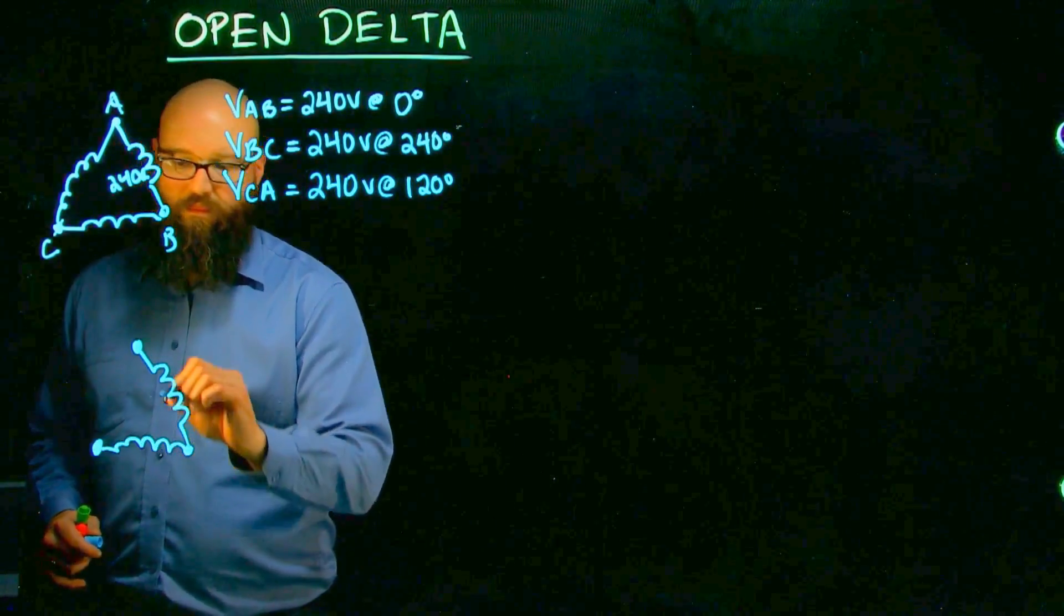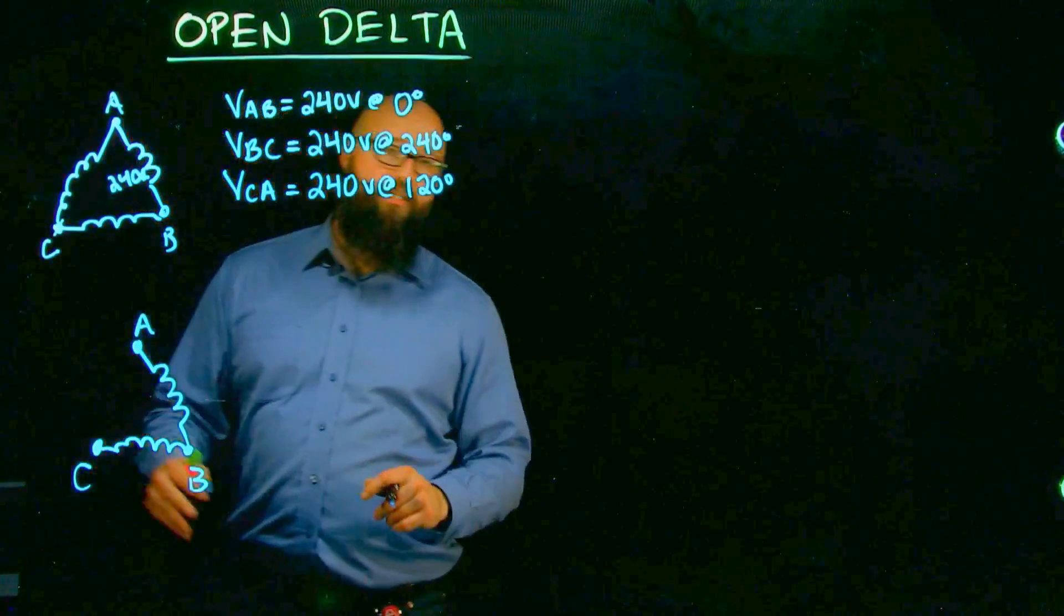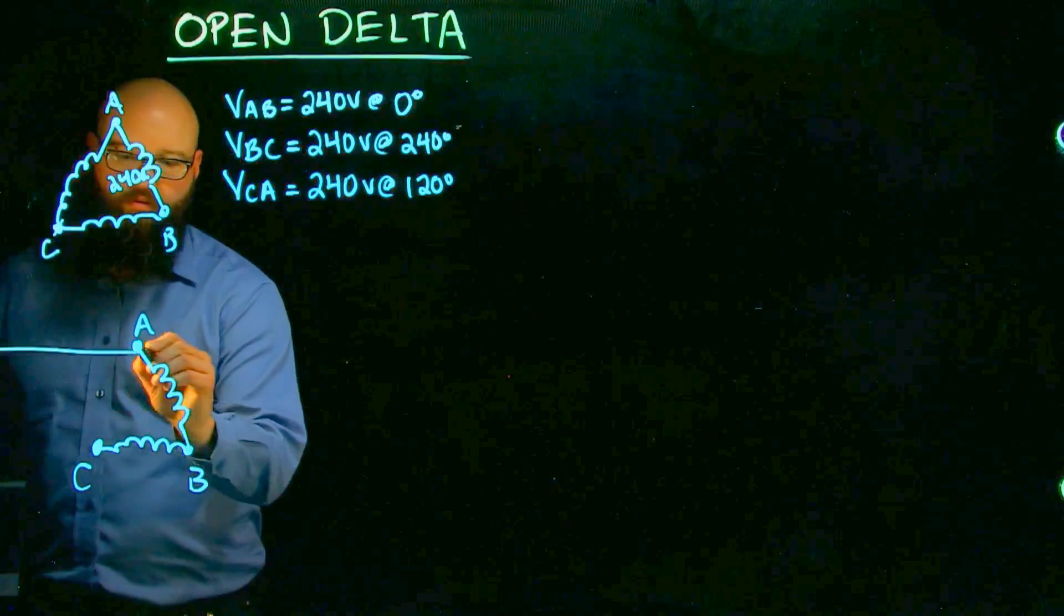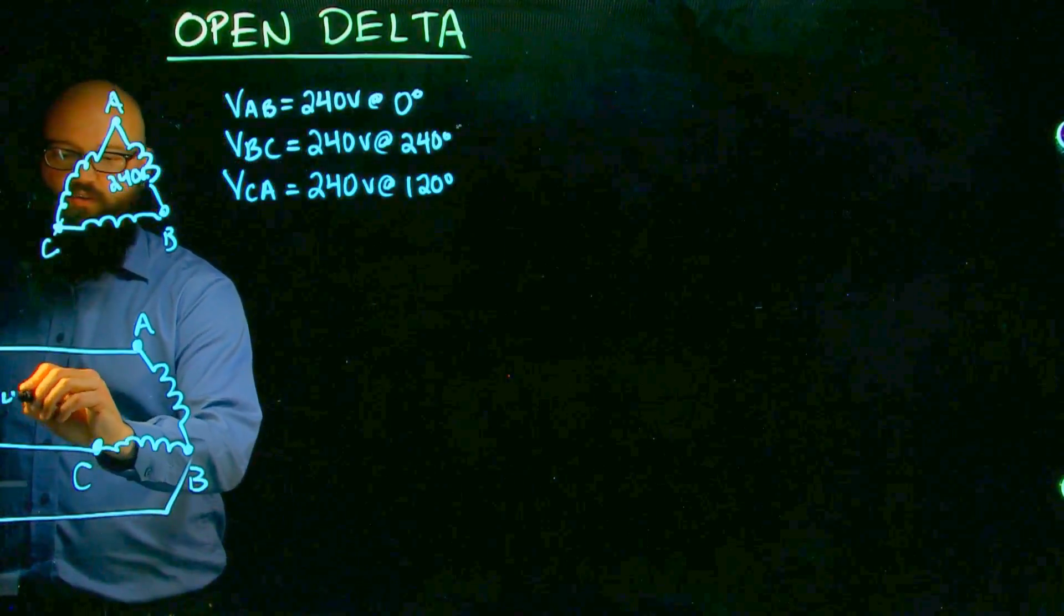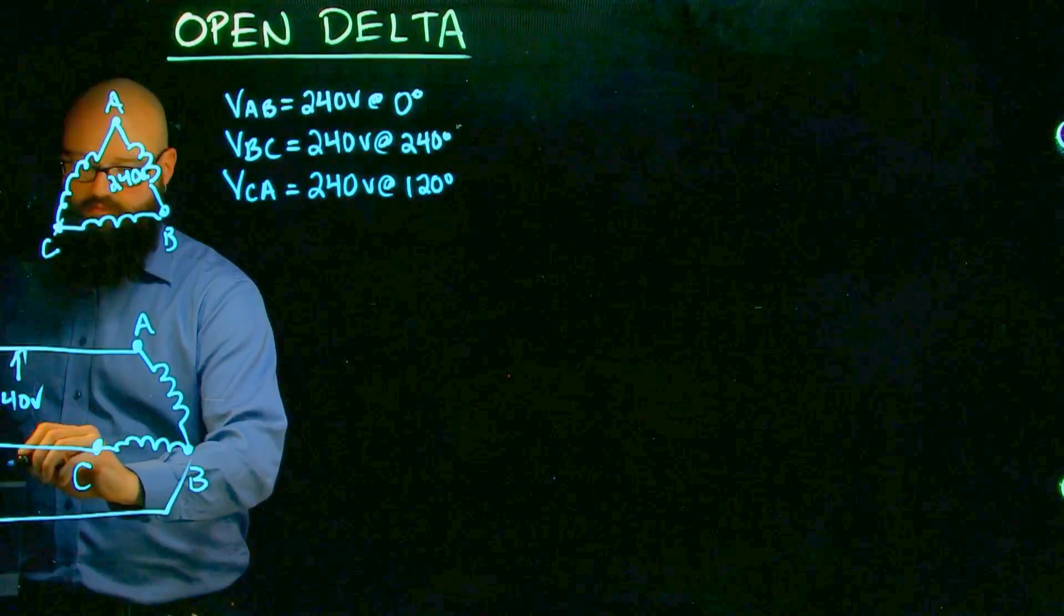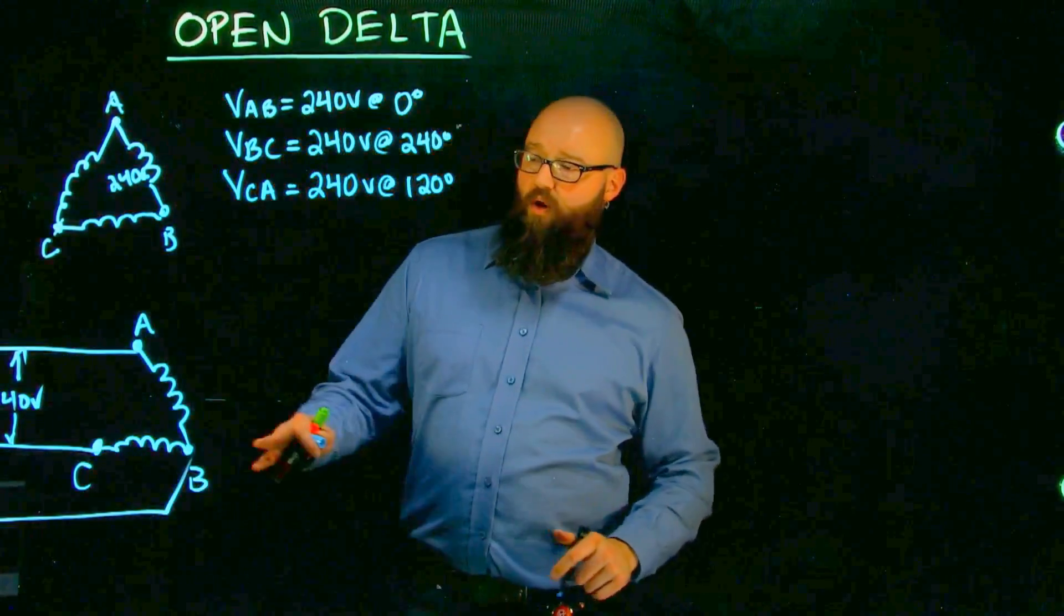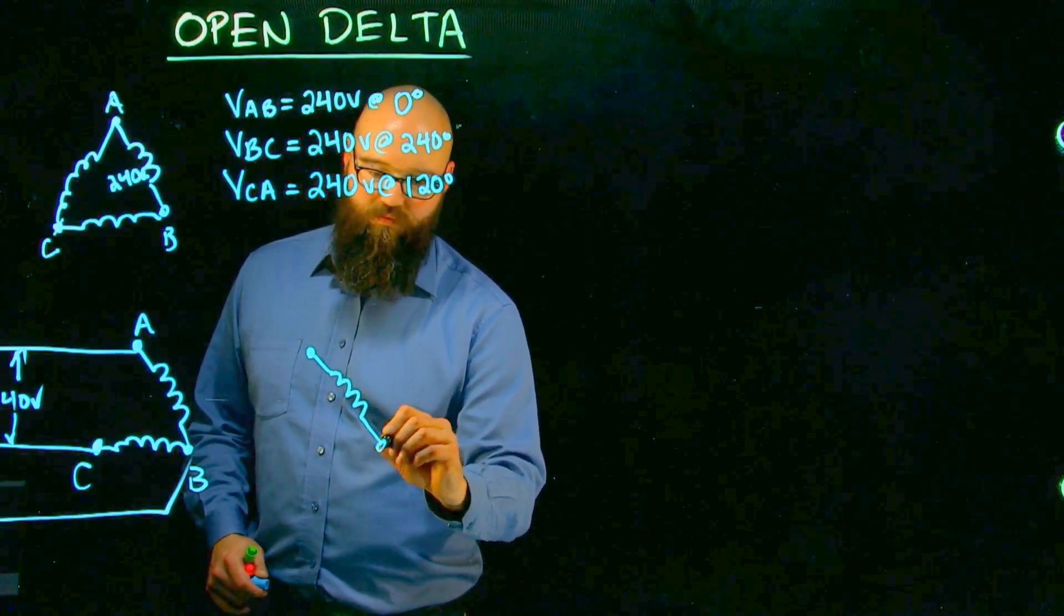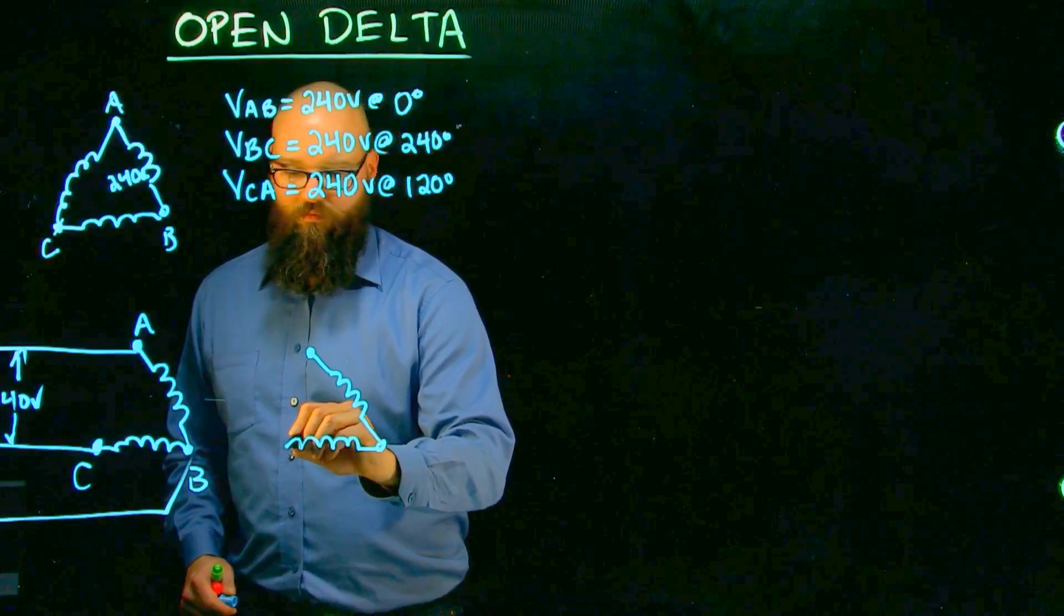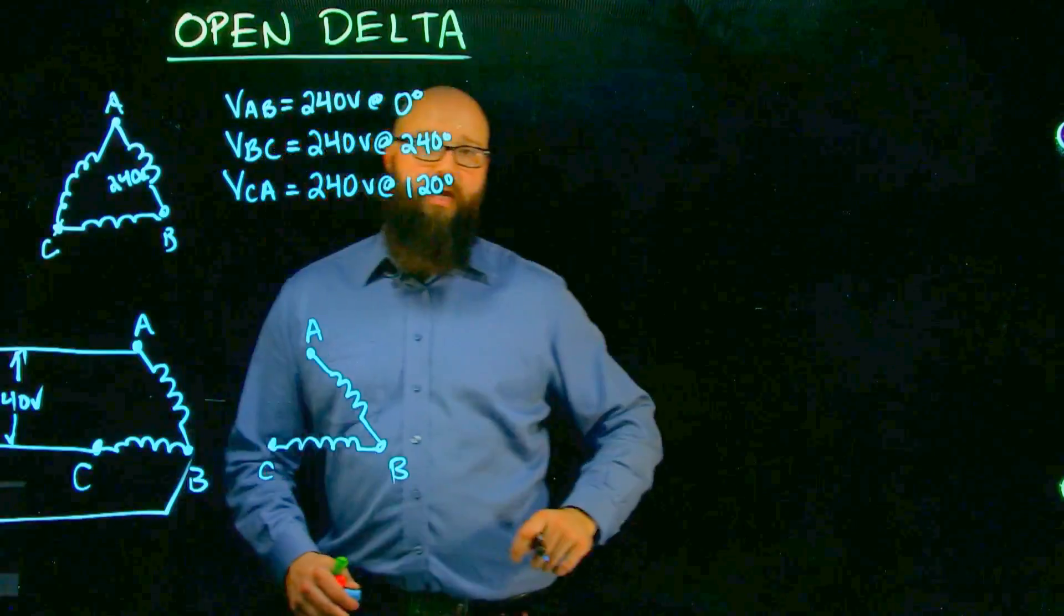So let's look at what happens with an open delta. A, B, C. We still have our applied voltage from our source of 240 volts line to line. When we lose that winding, we still have A, B, C.